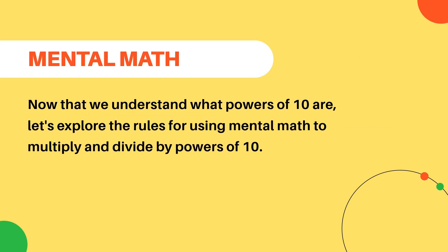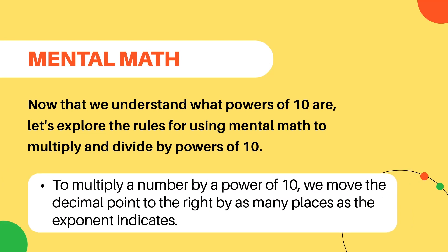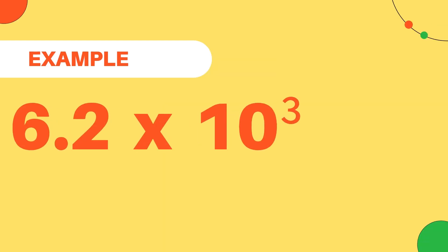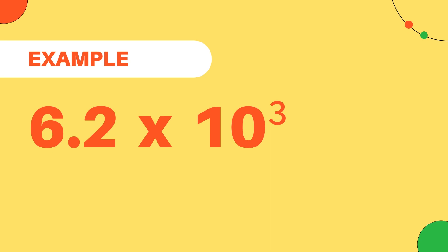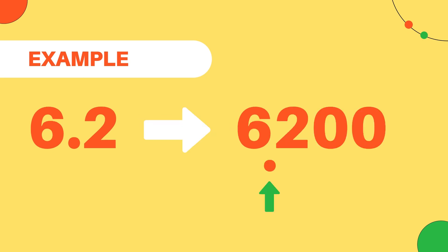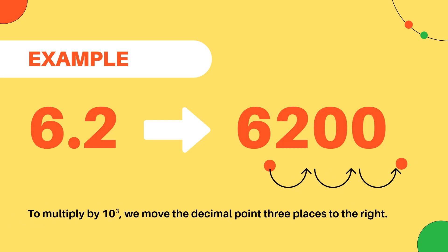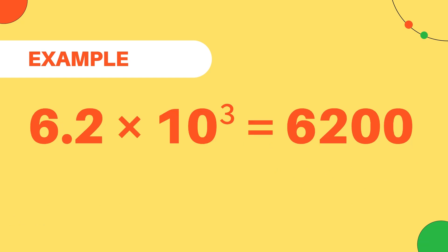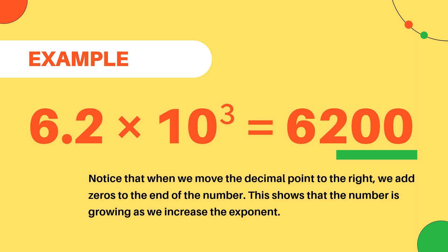Now that we understand what powers of 10 are, let's explore the rules for using mental math to multiply and divide by powers of 10. To multiply a number by a power of 10, we move the decimal point to the right by as many places as the exponent indicates. For example, multiply 6.2 by 10 to the power of 3. To do this, we move the decimal point three places to the right. So, the final solution is 6.2 multiplied by 10 to the power of 3 equals 6,200. Notice that when we move the decimal point to the right, we add zeros to the end of the number. This shows that the number is growing as we increase the exponent.